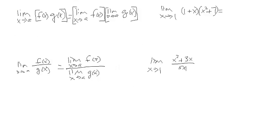We're going to continue with a couple more properties. We have the limit as x approaches a of f(x)·g(x) equal to the limit as x approaches a of f(x) times the limit as x approaches a of g(x) — we just take the limit of each piece and multiply them together. The example is the limit as x approaches 1 of (1 + x)(x² + 7).